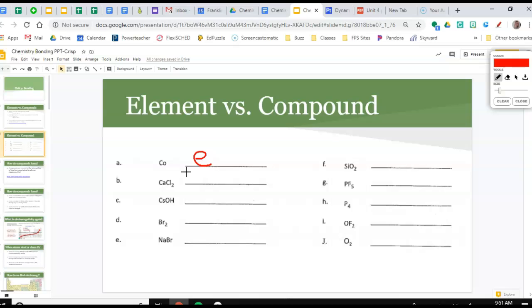The next one has calcium and chlorine together, so that's a compound - calcium chloride. CsOH has three different elements together, so that's a compound. For BR2, bromine has two atoms together, but because it's the same element, it's just an element. In order to be a compound, you need different elements coming together, so sodium and bromine would be a compound.